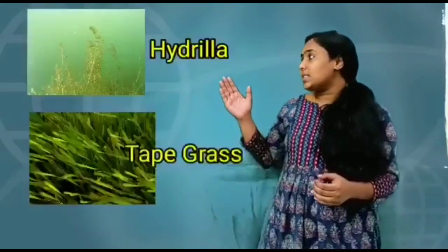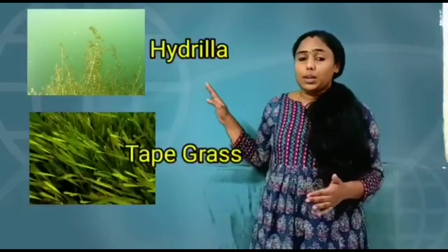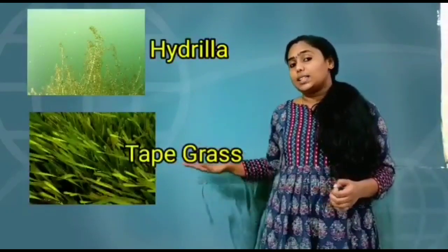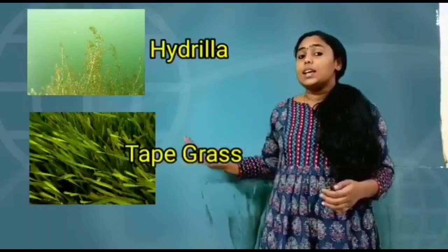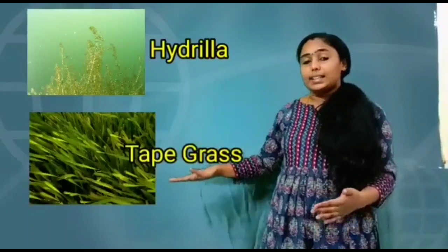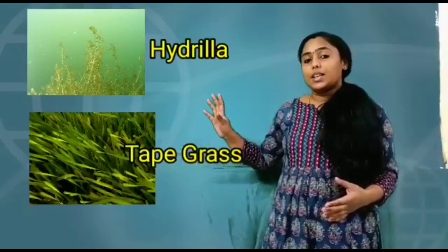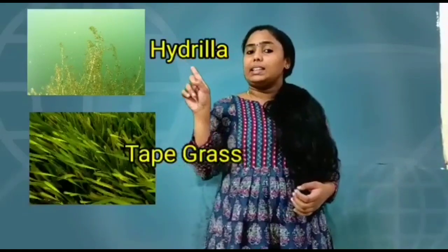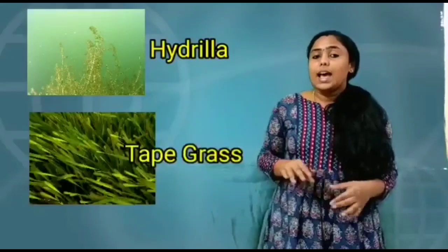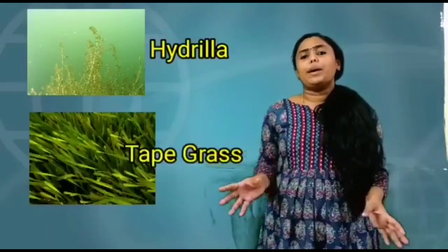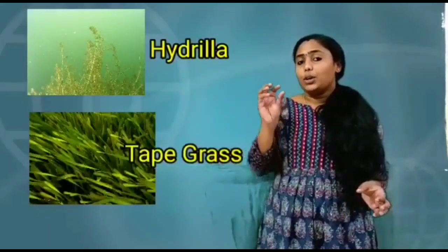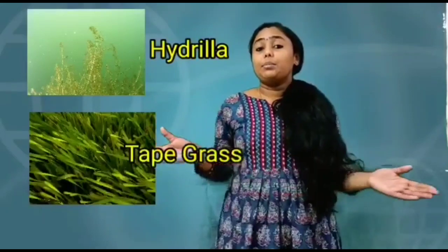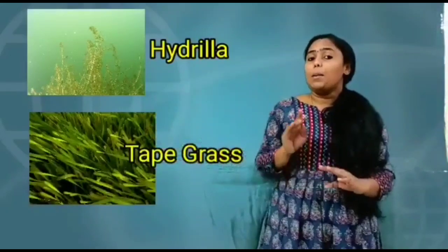The next category of aquatic plants is underwater plants. You can see hydrilla or tailgrass, which is submerged fully inside the water. Its leaves are completely inside the water and are very thin and narrow. Underwater plants do not have stomata on their leaves for breathing; instead, they breathe through their other body parts.